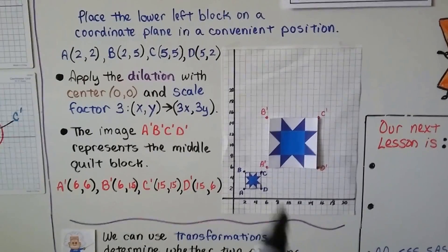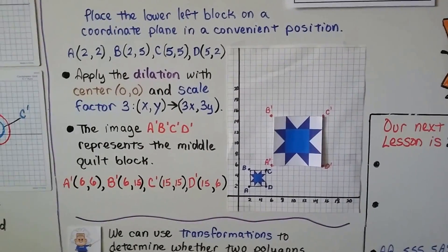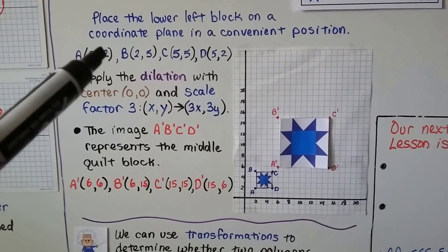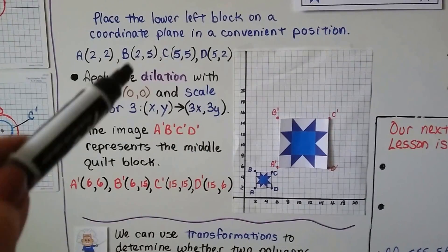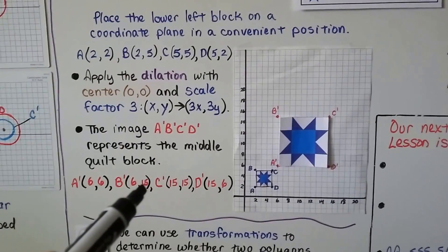The image a prime, b prime, c prime, d prime represents the middle quilt block. a prime is 2 for x, 2 for y multiplied by 3 to get 6,6. b prime is 2 for x, 5 for y multiplied by 3 to get 6 and 15.